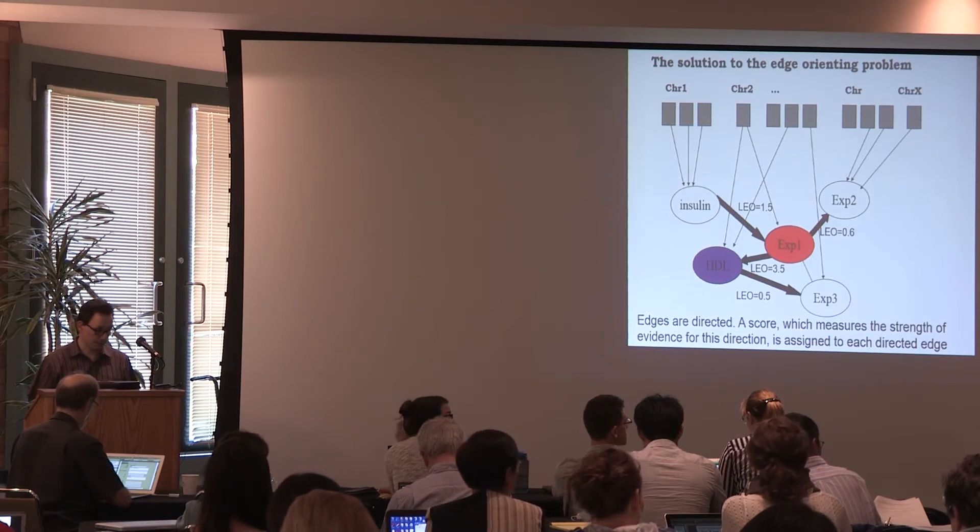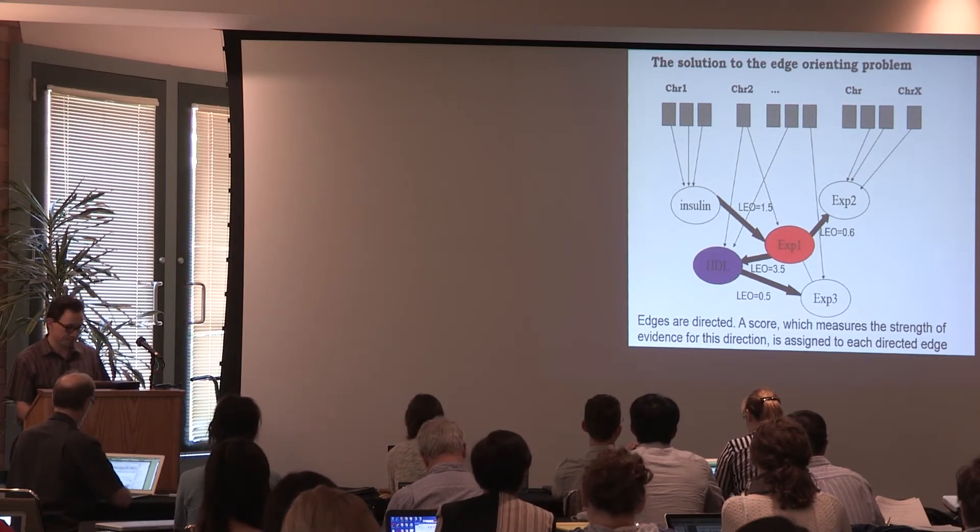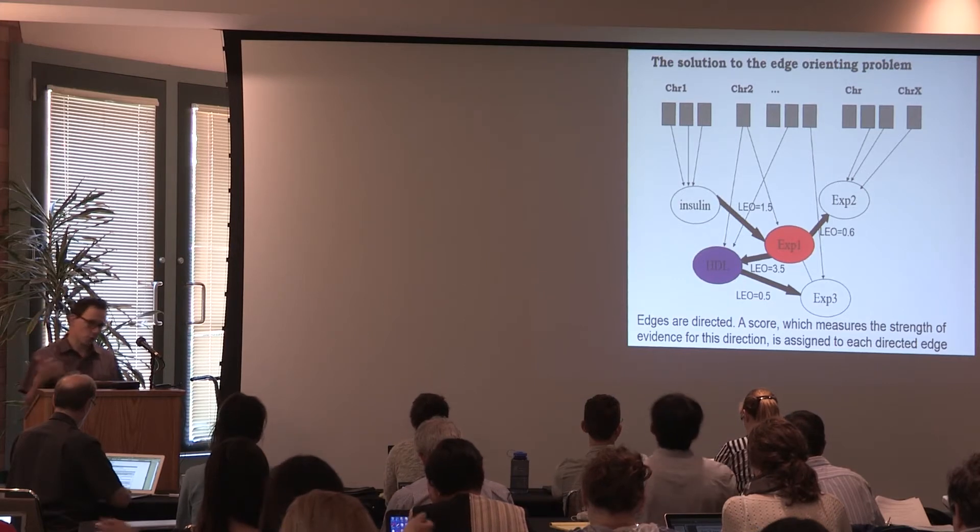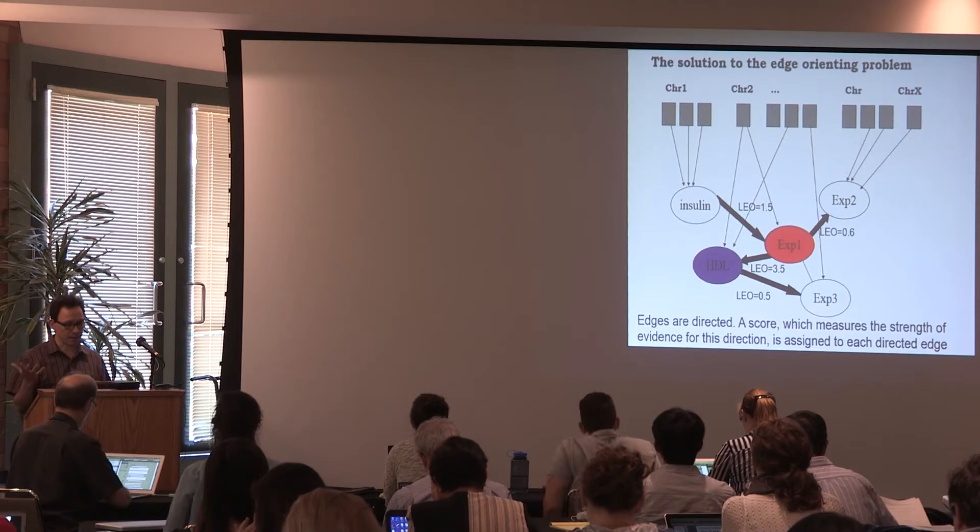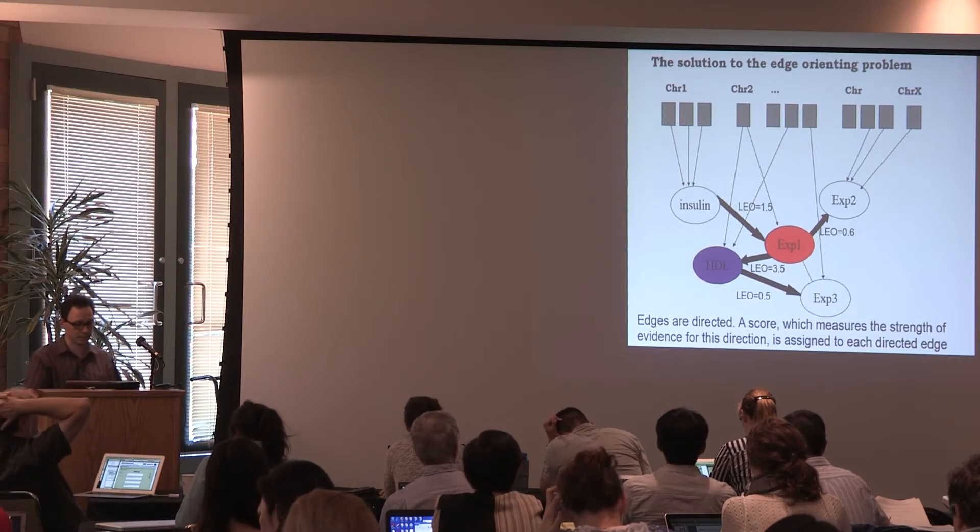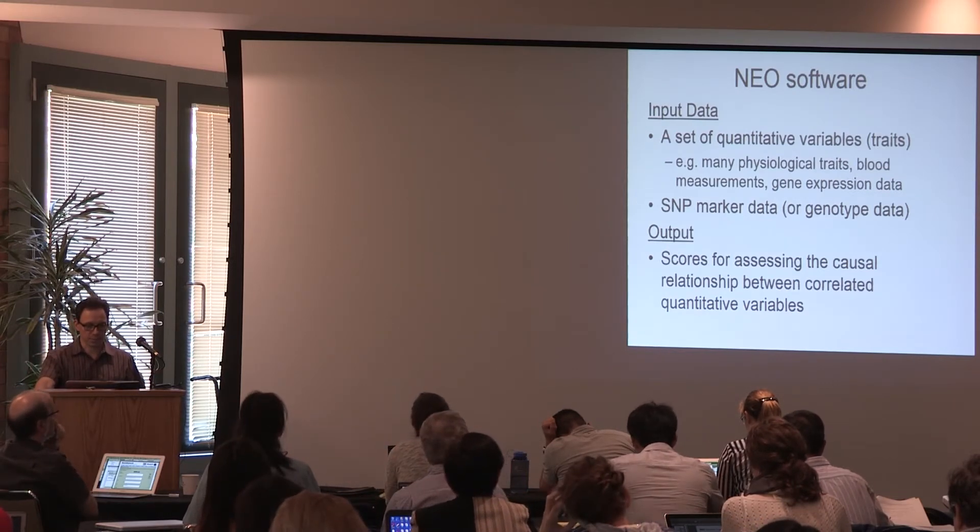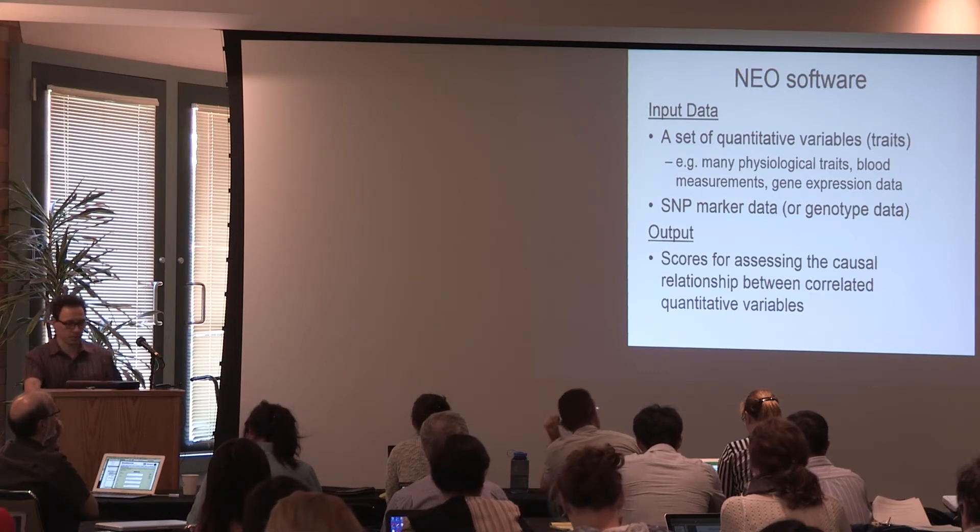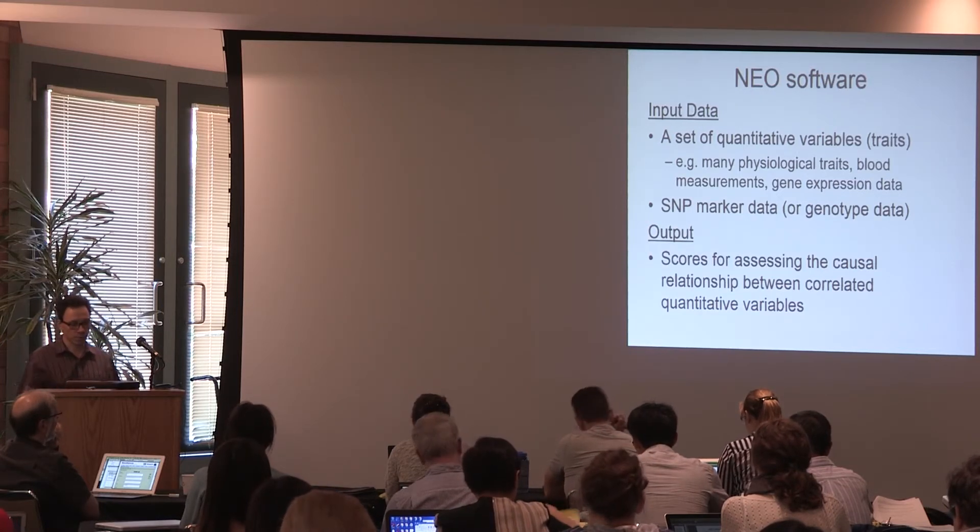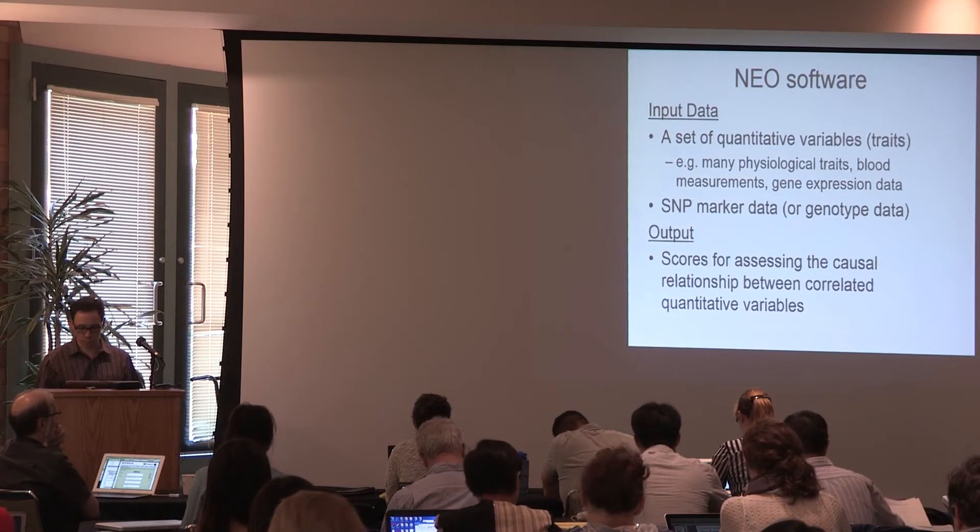This is statistics, and we are not completely sure of the statistical confidence. What we will do is we will calculate the so-called LEO score, local edge-orienting score, which is a number. If this number is high enough, we will say we are very confident that this is the causal edge, that this direction is as shown. The NEO software is really an R script where you input quantitative trait variables, physiologic traits, gene expression data, and also SNP markers. Then the output will be an Excel file or some R output that assigns scores to pairwise relationships. There will be an Excel sheet, and you see the edge from A to B. There will be a score. If this score is bigger than 1, then you say I'm confident that A causes changes in B.